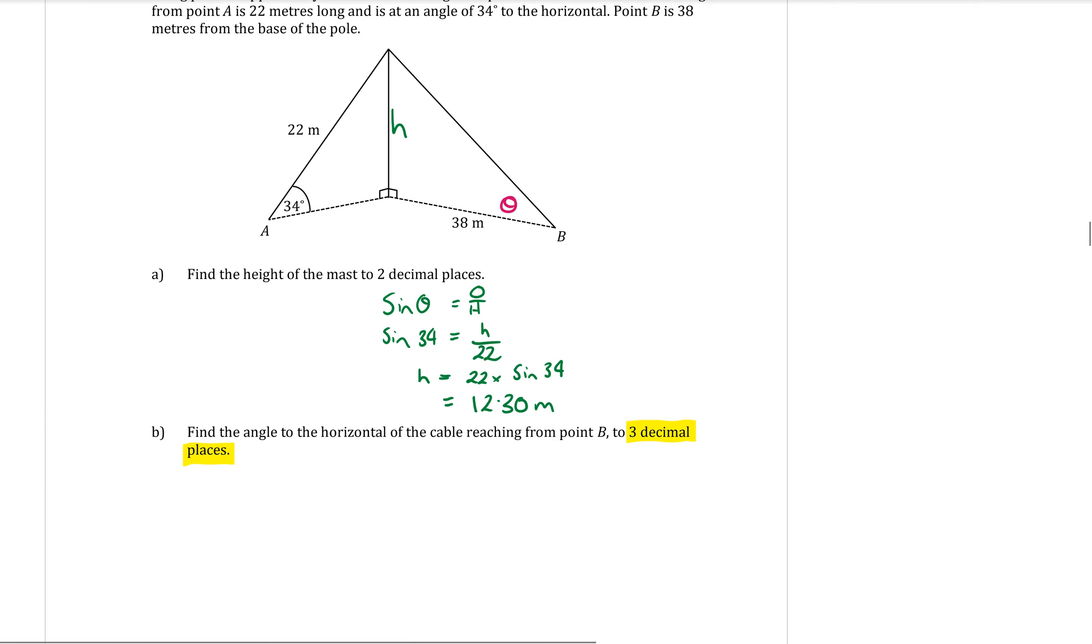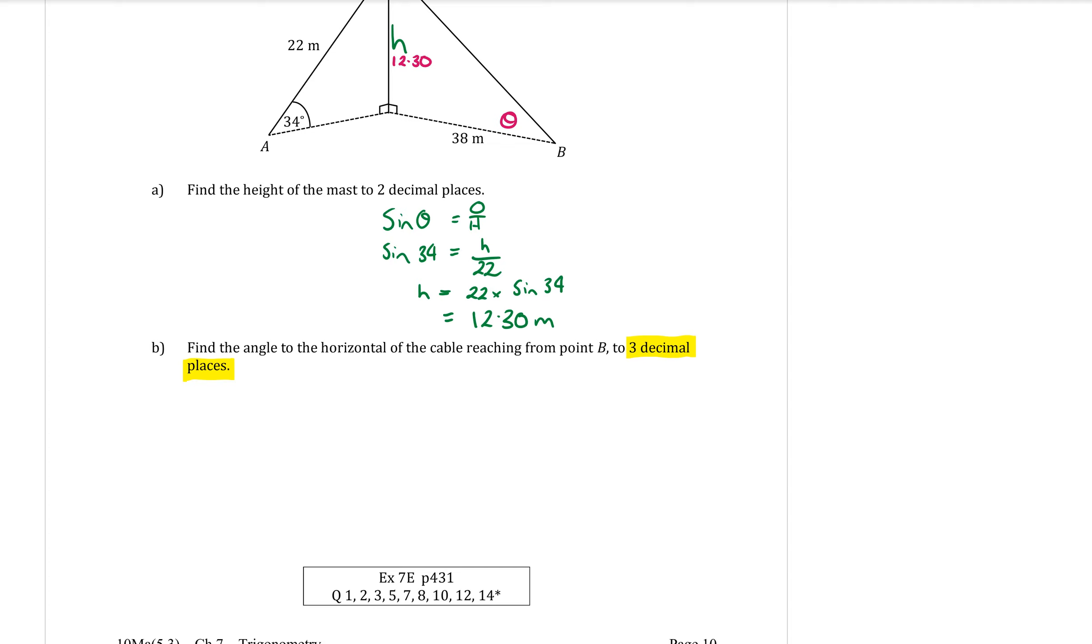We have just found that this side here is 12.30 metres tall. So remember this is a right angle triangle. I'm trying to find an angle. I have got the opposite side and I have got the adjacent side. So that is using tan. So write down the tan formula.